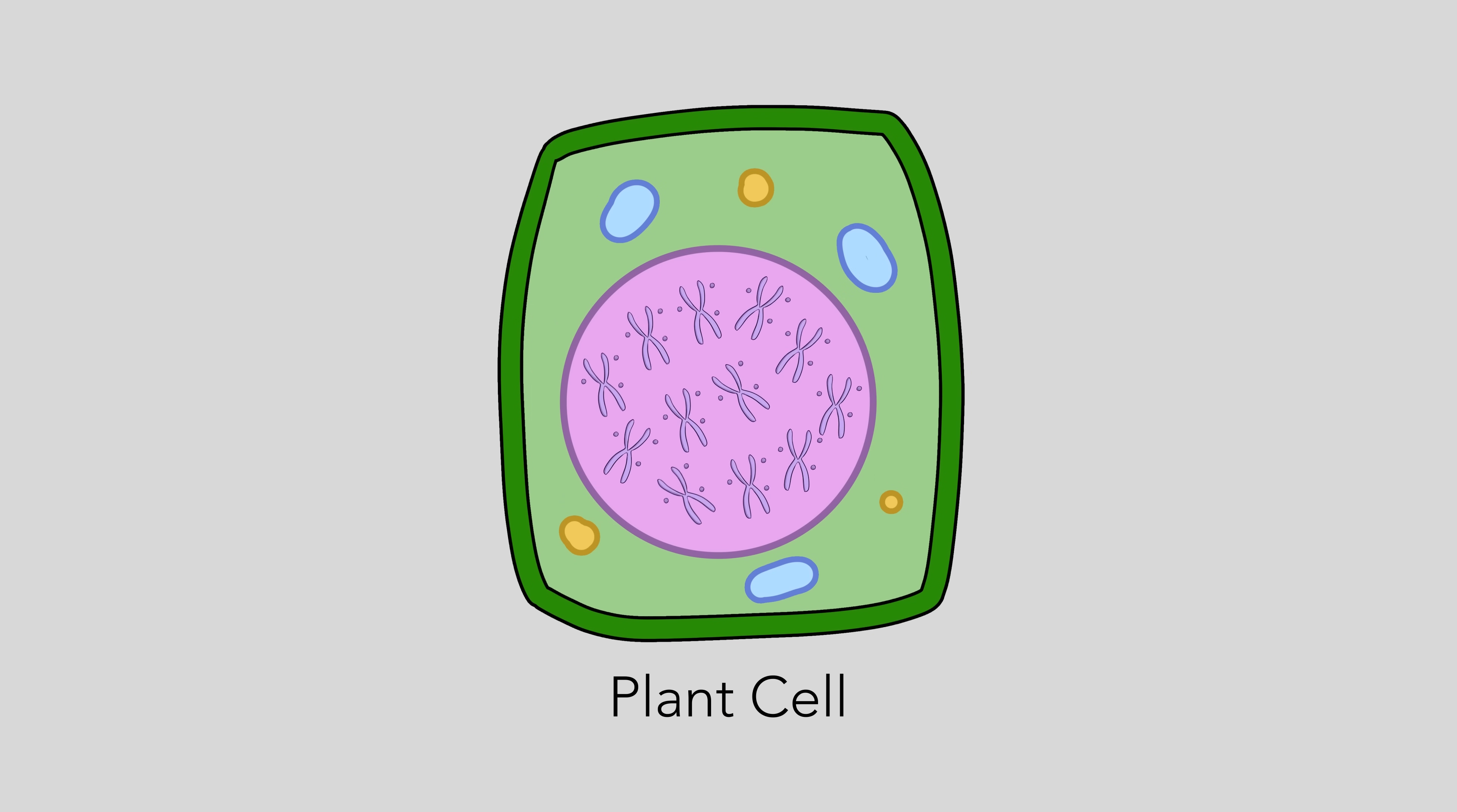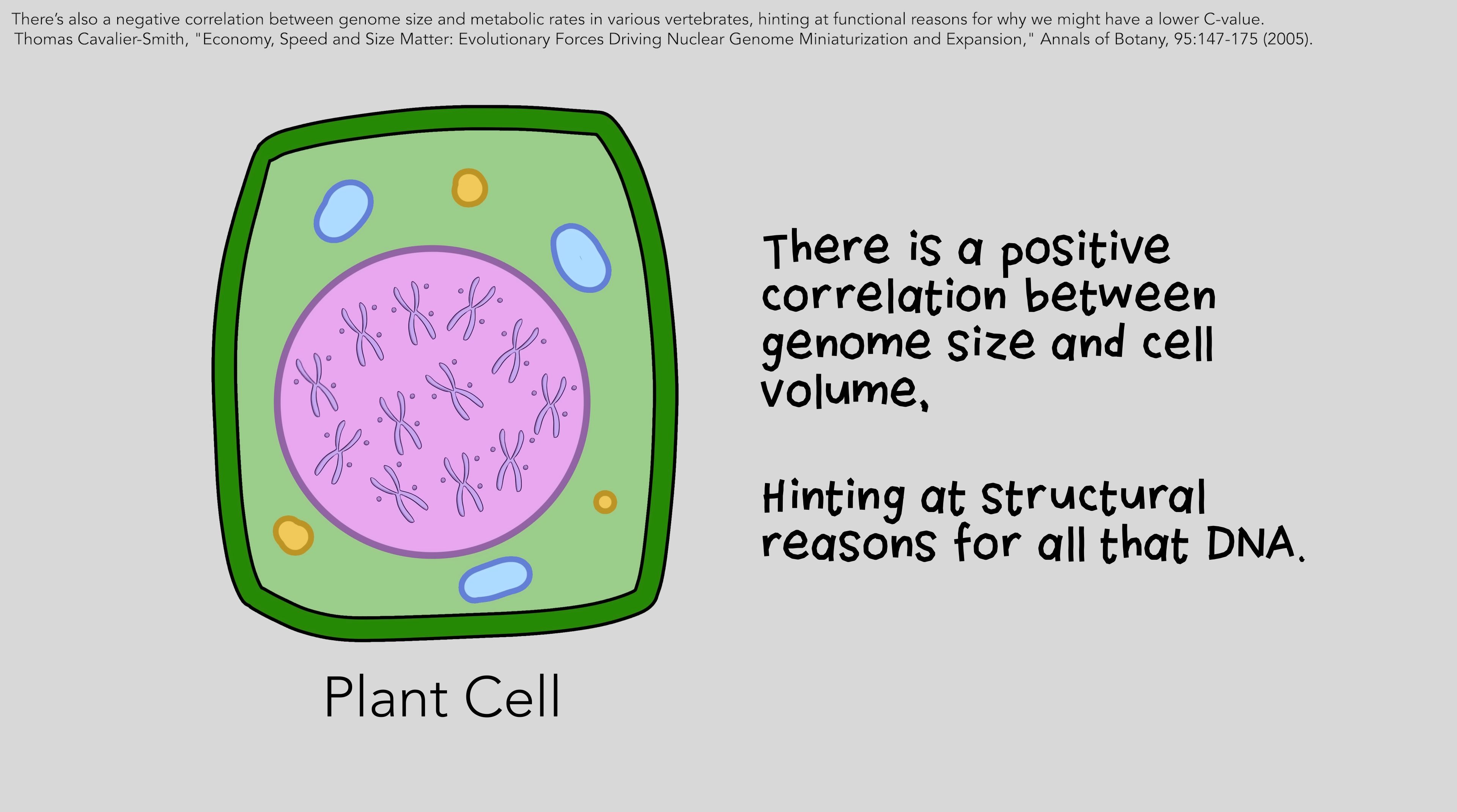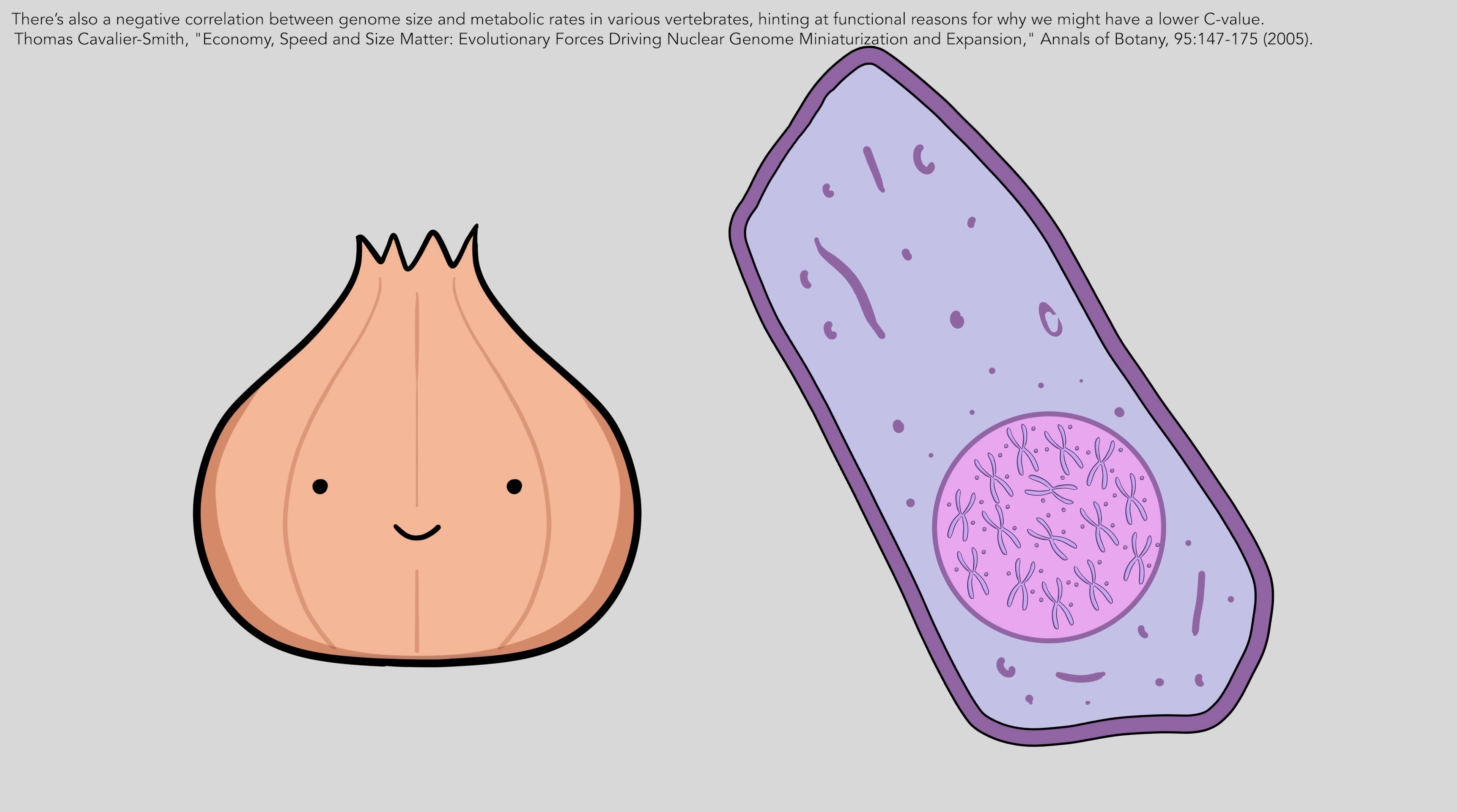Surely that entire gigantic genome can't all be functional, they say with incredulity. Actually, plants, such as onions, are often known to have a condition called polyploidy, where they can inherit extra sets of chromosomes. This can lead to the large genome size. Also, there's a positive correlation between genome size and cell volume, hinting at structural reasons for all that DNA. If you've ever looked at onion cells under a microscope in biology class, you know that onion cells can be very large. So it makes sense that they might have a lot of DNA for structural reasons.